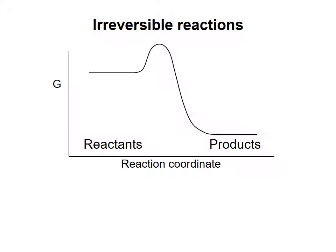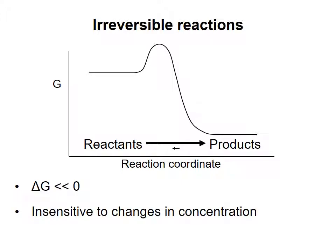Now suppose that the conversion of reactants to products has a large negative delta G. The forward reaction is heavily favored and the reverse reaction happens at a much much slower rate. The rate of the reverse reaction is so small relative to the rate of the forward reaction that reactions with very negative values for delta G are often said to be irreversible. For these reactions, small changes in metabolite concentration have only a minor impact on the delta G, and cannot make the reverse reaction occur to any substantial degree. Irreversible reactions are therefore insensitive to changes in metabolite concentration.